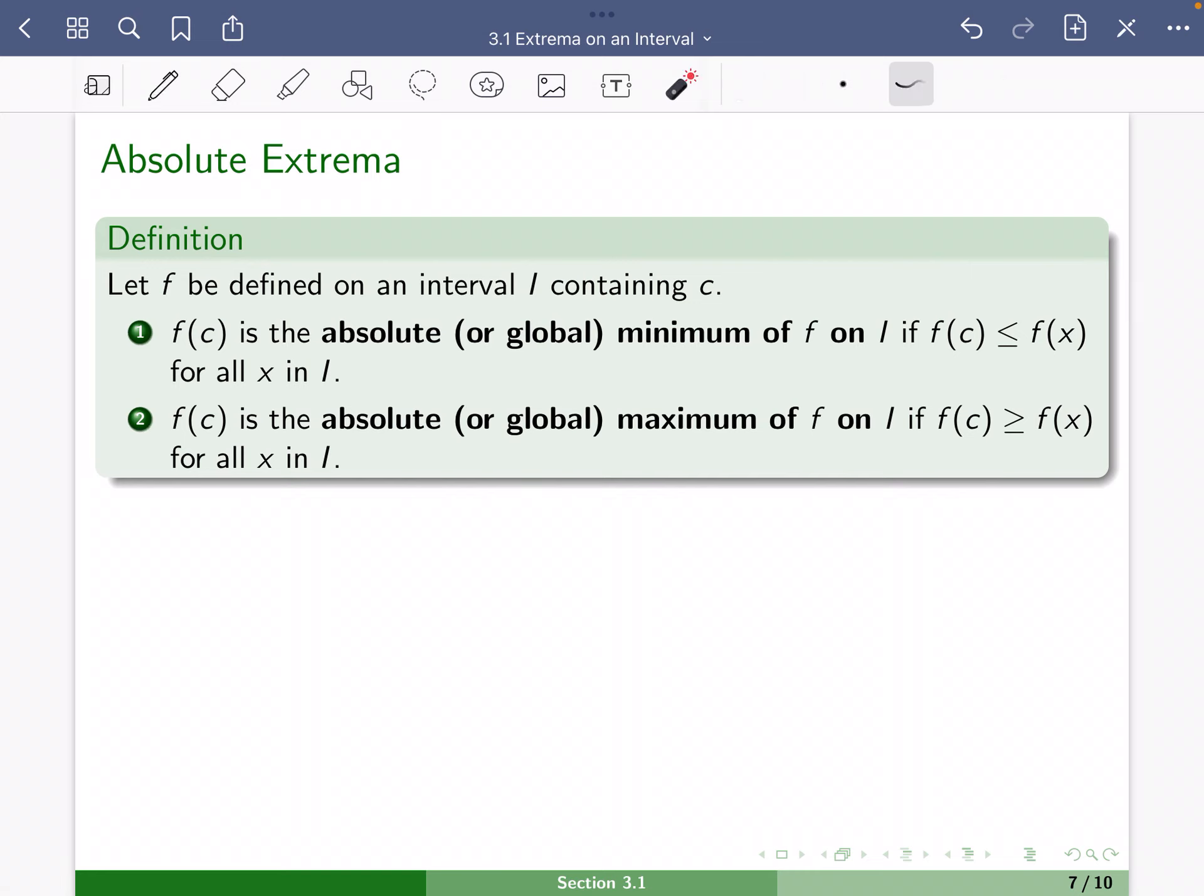Let f be defined on an interval I containing c. The value f(c), so the function value at c, is an absolute or global minimum on that interval if the function value is smaller than all of the other function values, or less than or equal to all of the other function values in that interval.